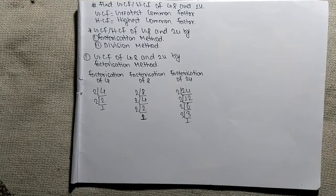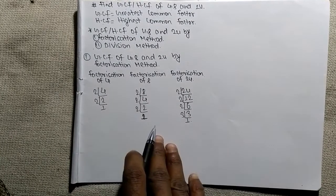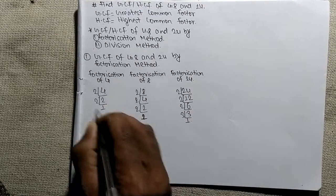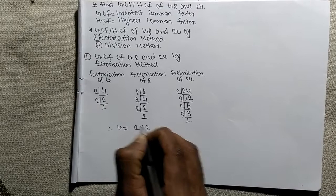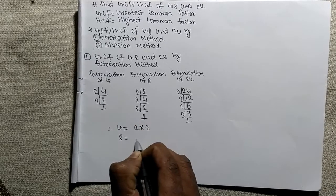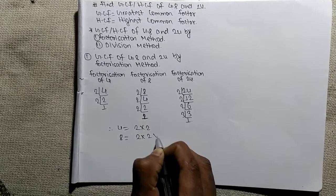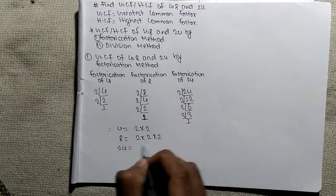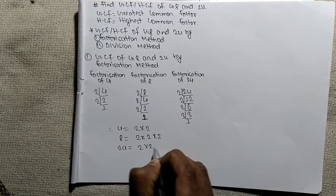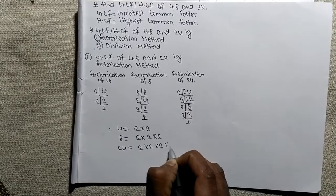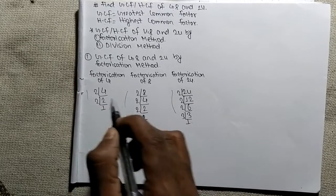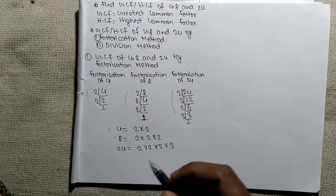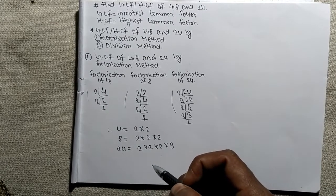As you can see, we have taken the prime factors of all the given numbers. From the prime factors we can write: 4 is equal to 2 × 2; 8 is equal to 2 × 2 × 2; and 24 is equal to 2 × 2 × 2 × 3. So we have written the factorized elements of all the given numbers.